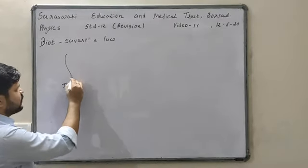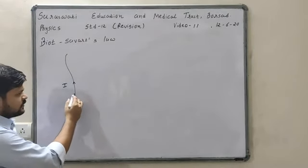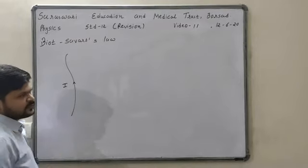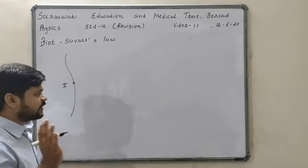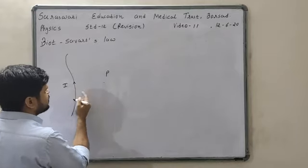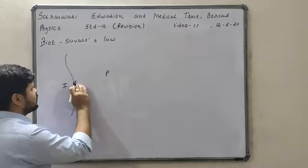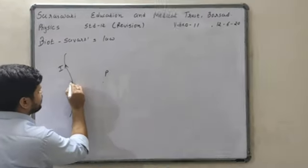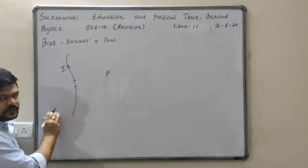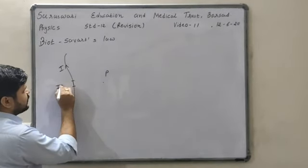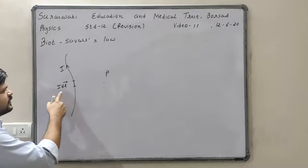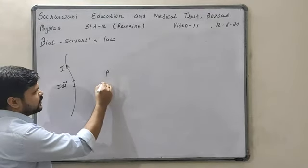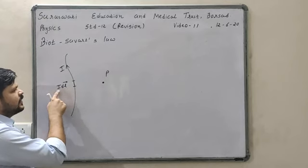If current is flowing from this wire, then this wire will behave as a magnet and magnetic field will be generated around it. Suppose there is a point P which is at distance R from some small element of current. From this wire current I is flowing but we are considering only one small element of current of length DL, so that small element of current is called IDL. We want to find out the magnetic field at point P due to this small element of current.